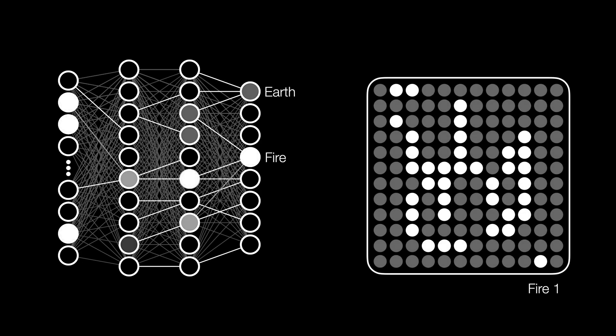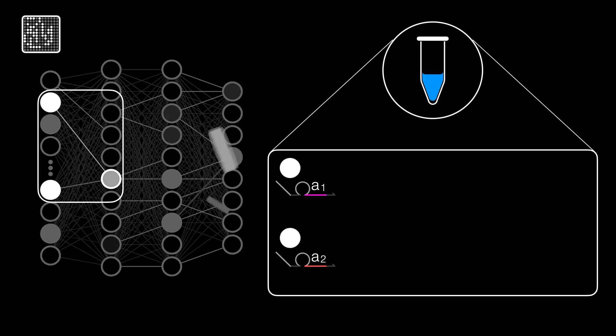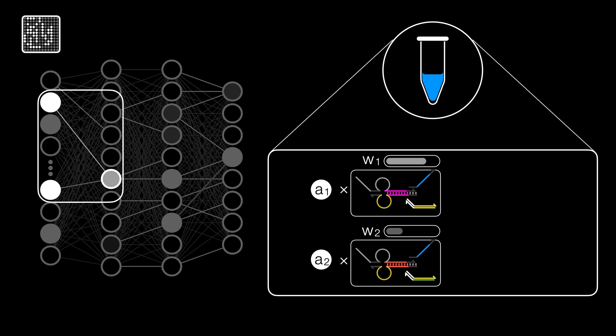This is an AI called a neural network, but all of the transistors and electronics are replaced with DNA, the molecule of life. All of that in one test tube.